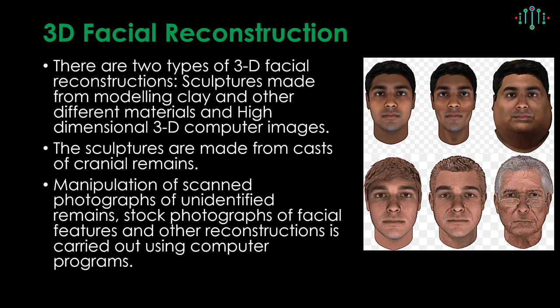3D facial reconstruction has two types: sculptures made from modeling clay and other materials, and high-dimensional 3D computer images. For the clay technique, the complete skull and cranium with all bones are assembled and fixed on a flexible, movable platform so that muscles and soft tissues can be properly attached. A good step-by-step gallery demonstrates how clay is used for 3D facial reconstruction.